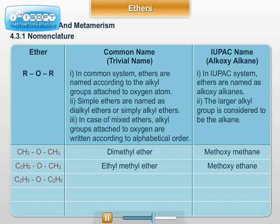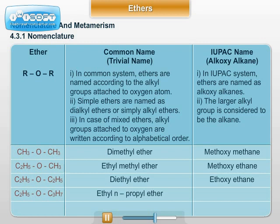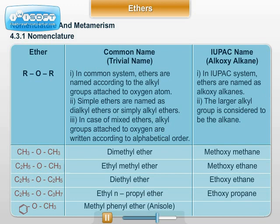Further examples: C₂H₅OC₂H₅ — diethyl ether, IUPAC name ethoxyethane. C₂H₅OC₃H₇ — ethyl N-propyl ether, IUPAC name ethoxypropane. C₆H₅OCH₃ — methyl phenyl ether, also known as anisole; in the IUPAC system it is named as methoxybenzene.